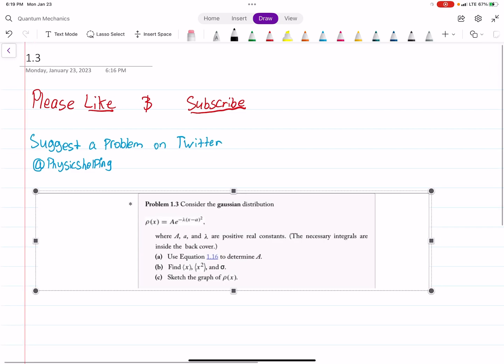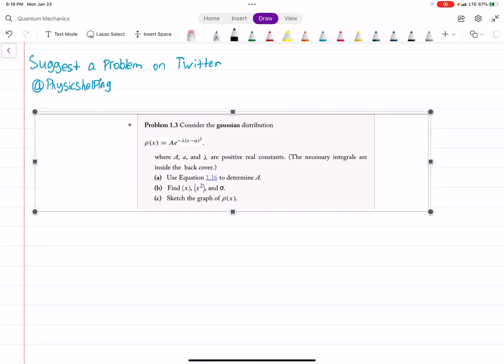So problem 1.3 out of Griffith's, we're considering this Gaussian distribution, and part A tells us to find capital A. So the way that we do that is we say, well, it gives us the equation here, 1.16.